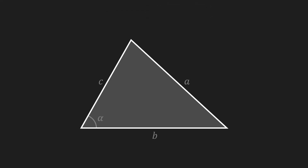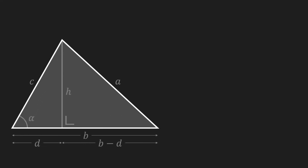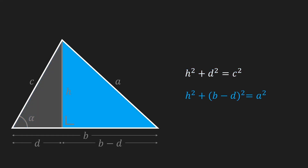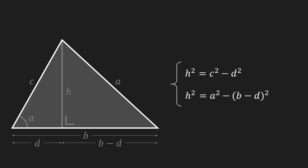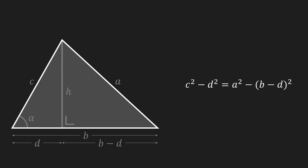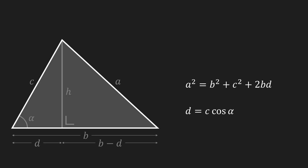Reformulating that formula gives us an expression for the length of side a, or we can reformulate it once again to get an expression for the angle alpha. To understand where the cosine rule comes from, I'm going to draw a line h which divides our triangle into right-angled triangles. b is the width of our original triangle and I'm also going to introduce d, which is the width of the left triangle — so the width of the right triangle is b minus d. Since we now have two right-angled triangles we can write down the Pythagorean theorem twice. Rearranging these, we get two expressions for h squared that are equal to each other. We know that d divided by c equals the cosine of alpha, so d equals c times the cosine of alpha, and substituting that in gives us the cosine rule.